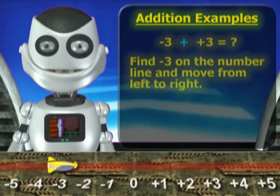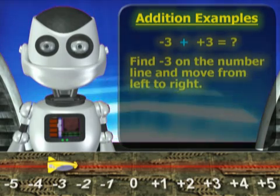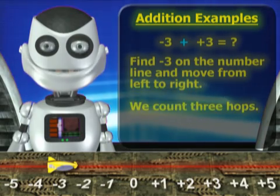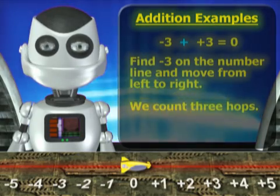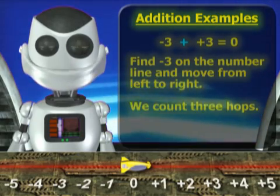Find negative three on the number line and move from left to right. So we count the number of hops to the right and end up at zero. So negative three plus positive three equals zero.